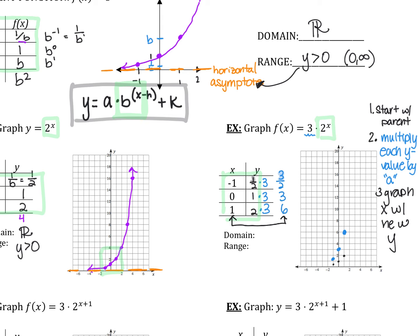This graph still can't go below the x-axis. It just goes up much quicker than our other graph — multiplying by an a value of 3 makes the graph rise a lot faster. But guess what didn't change: my horizontal asymptote is still at 0. So my domain is still all reals, and my range is still y is greater than 0, or 0 to infinity.